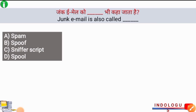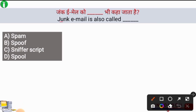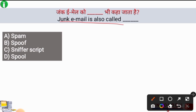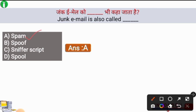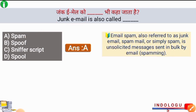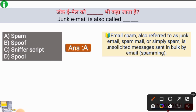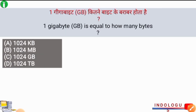Next question: Junk email is also called what? The right answer is option A, spam. Junk email is also known as spam. Email spam, also referred to as junk email or spam mail, is unsolicited messages sent in bulk by email spamming.